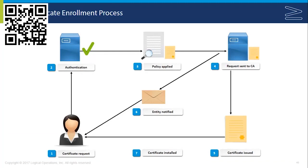Then the certificate is issued and placed in a repository. The entity is notified that the certificate is available, and then the certificate is accessed and installed. That's your typical certificate enrollment process. Do realize that in some cases this might be slightly different depending on the entity and depending on the scenario.